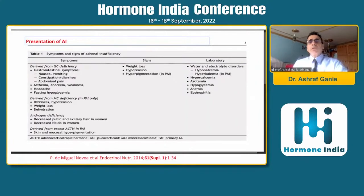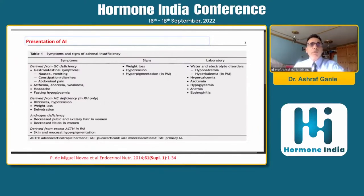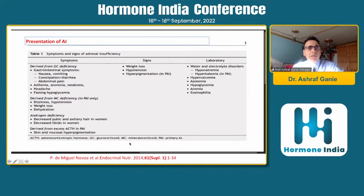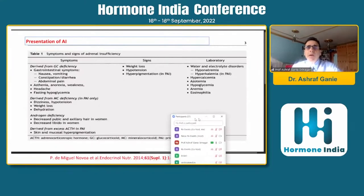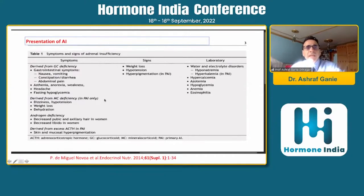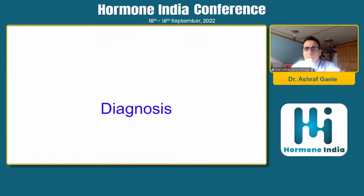When the adrenal gland, pituitary, or hypothalamus is affected, you will generally have common symptoms of glucocorticoid deficiency. When the adrenal gland alone is affected, you may have superadded symptoms of mineralocorticoid deficiency and androgen deficiency. These include gut symptoms like nausea, vomiting, constipation, diarrhea, abdominal pain, anorexia, weakness, headache, hypoglycemia, weight loss, hypotension, hyperpigmentation in primary adrenal insufficiency, and electrolyte disturbances. Mineralocorticoid deficiency adds risks of dehydration, hypotension, and androgen deficiency in women such as loss of pubic and axillary hair and decreased libido.